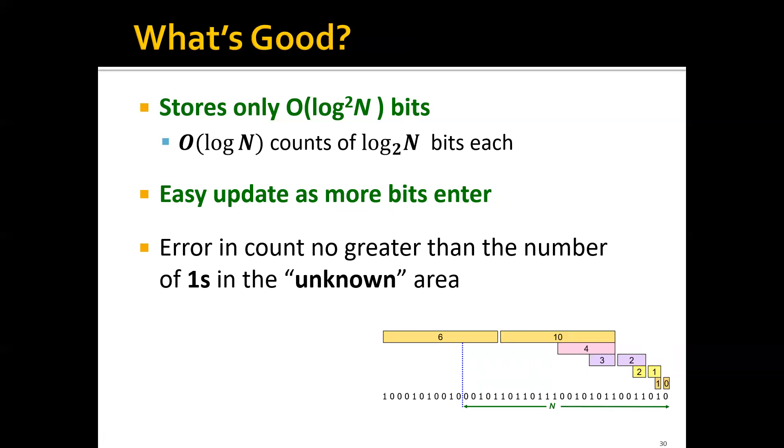Another thing that's good is that it's easy to update as more bits come. The error in count is no greater than the number of ones in the unknown area. For example, here, the last window has 6 ones. You can see that if we count these streams, the error can never be larger than 6.